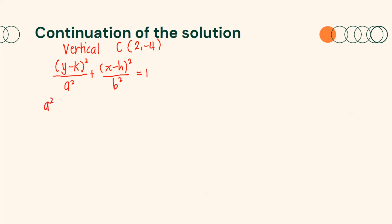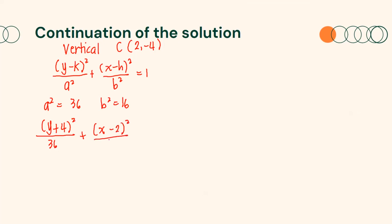A² is equal to 36 and b² is equal to 16. Substituting the center, a², and b² into our standard form, we get (y + 4)² over 36 plus (x − 2)² over 16 equals 1. Therefore, this is our equation in standard form.